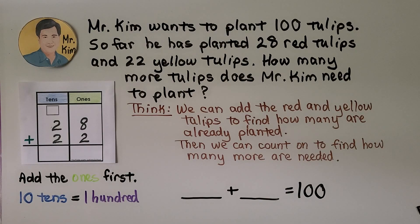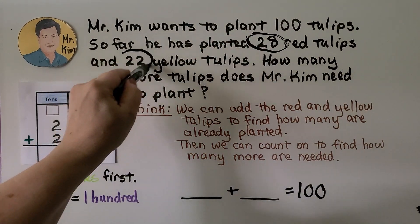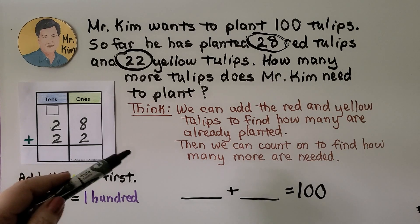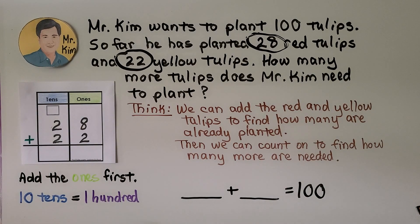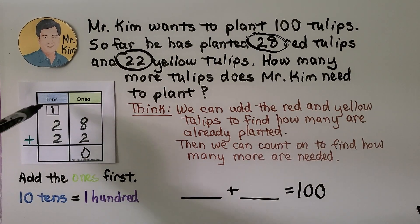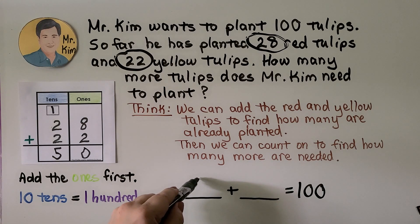Mr. Kim wants to plant 100 tulips. So far he has planted 28 red tulips and 22 yellow tulips. How many more tulips does Mr. Kim need to plant? We can add the red and yellow tulips to find how many are already planted: 28 plus 22. We start with the ones place: eight plus two is ten — that's one ten, zero ones. Two plus two is four, plus one more is five. He's planted 50 tulips.